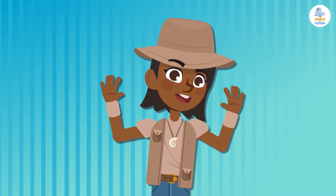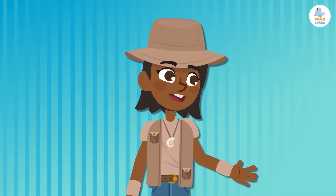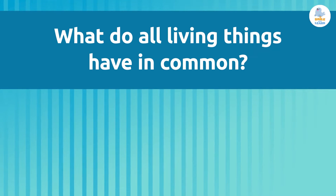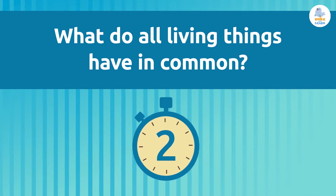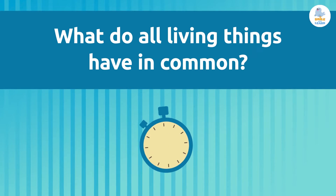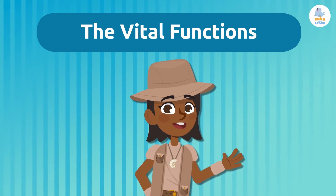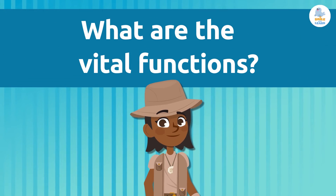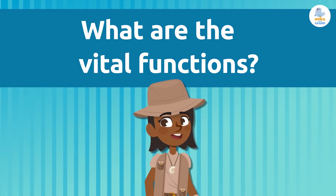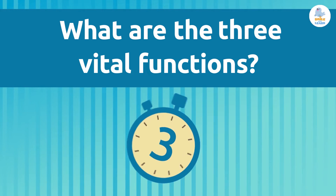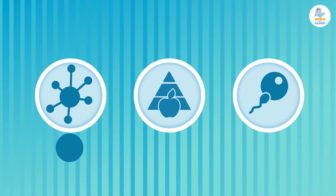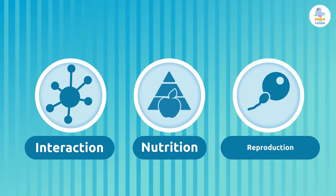Today, we're going to learn how we classify living things. Do you remember what all living things have in common? They all fulfill the vital functions. And the vital functions of living things are interaction, nutrition, and reproduction.